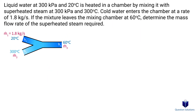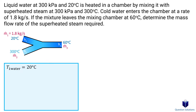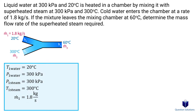In this problem, we have water being heated up to 60 degrees Celsius with superheated steam. We need to figure out the mass flow rate of steam required to increase the temperature of the water. The initial temperature of the water is 20 degrees Celsius at 300 kPa. This water is mixed with superheated steam at 300 kPa and 300 degrees Celsius. The cold water enters at 1.8 kg/s, and the mixture leaves the mixing chamber at 60 degrees Celsius. We write our energy balance — since it's a mixing chamber, we have two mass flows entering and one exiting, so m-dot-1·h1 + m-dot-2·h2 = m-dot-3·h3.